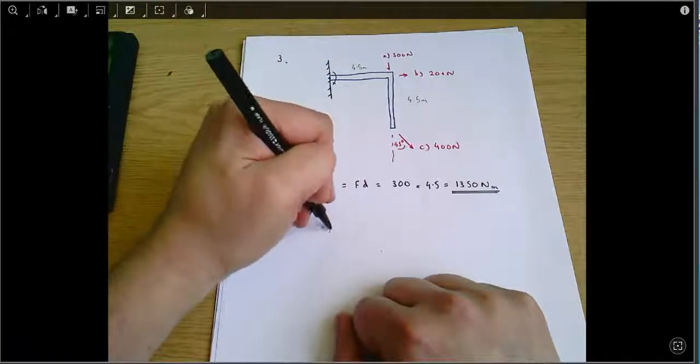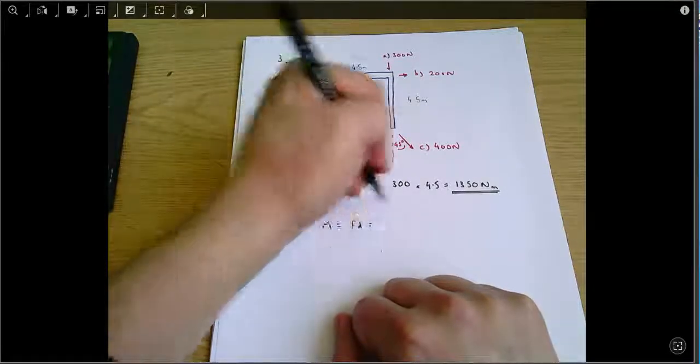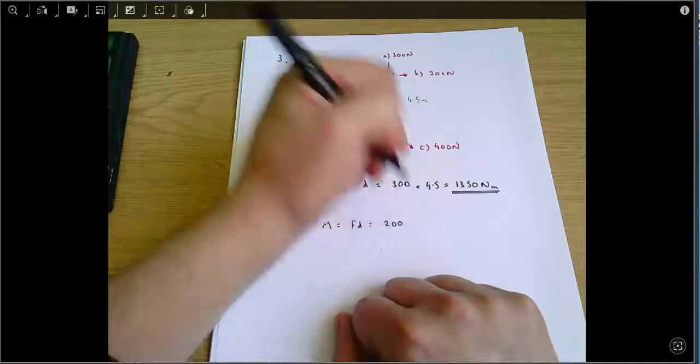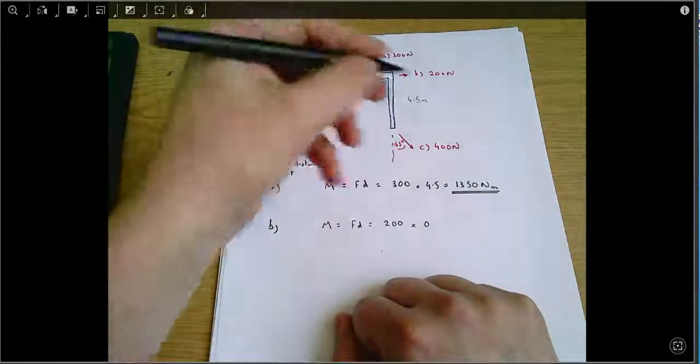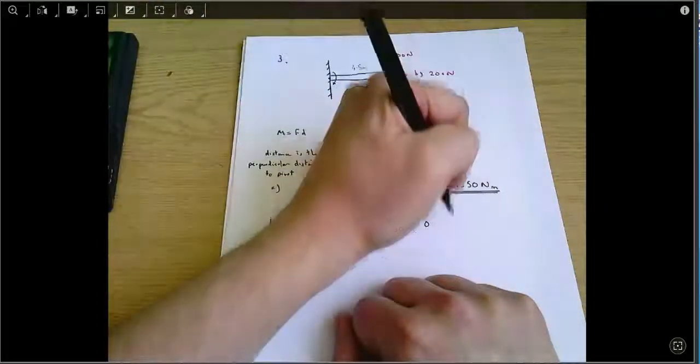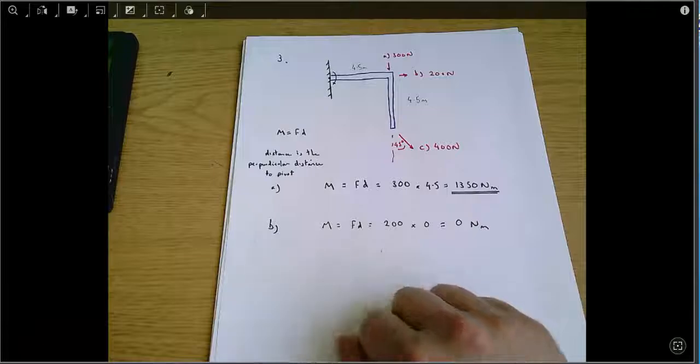If we want to express that in a calculation, I suppose we could always say moment equals force times distance equals 200 Newtons is the force times zero is the perpendicular distance from this line here to the origin because the line actually goes through the origin equals zero Newton meters. Again, that's the answer.